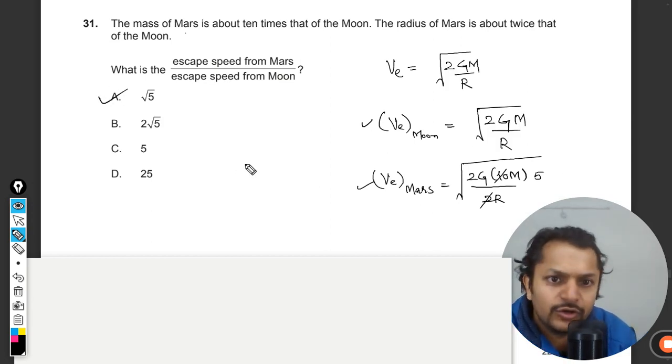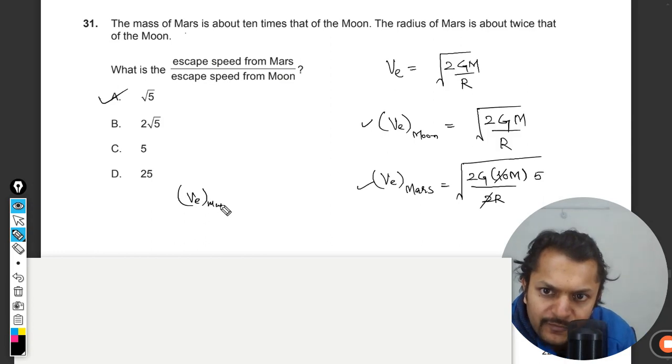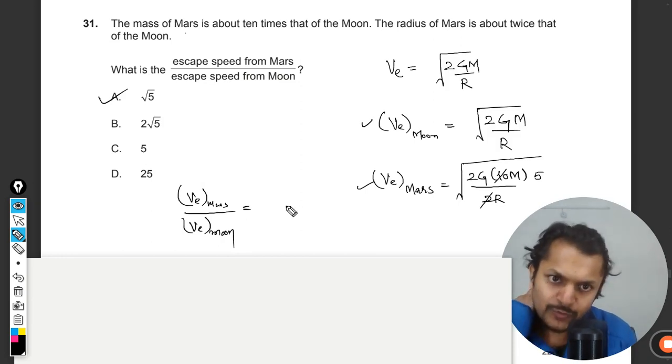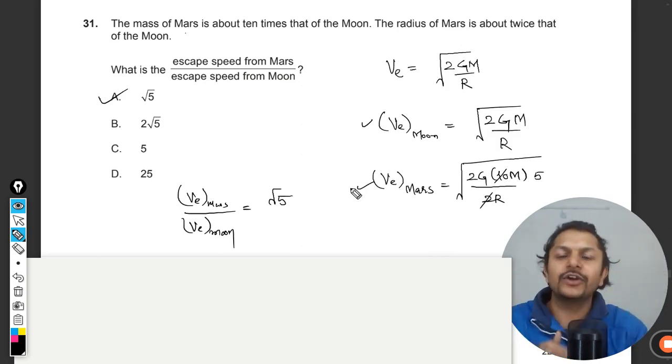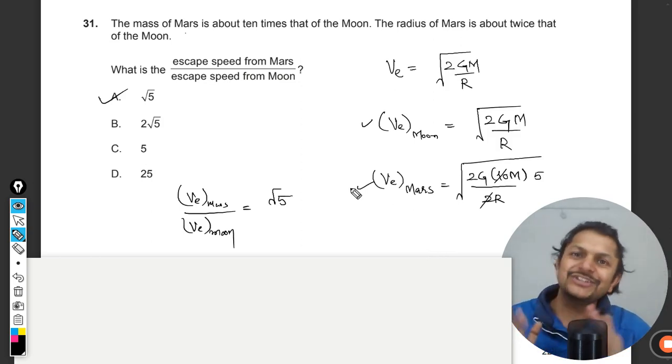So the answer is A. The escape speed of Mars divided by the escape speed of Moon equals square root of 5. You can divide these two equations yourself, and the answer is A. This is how we solve this question.